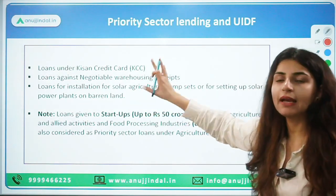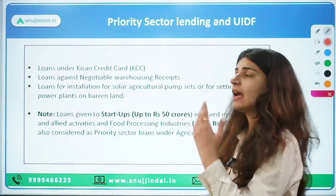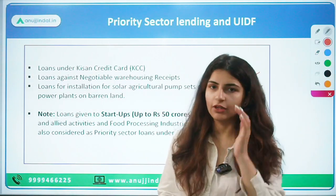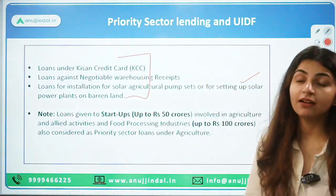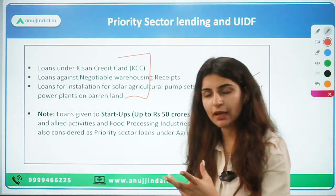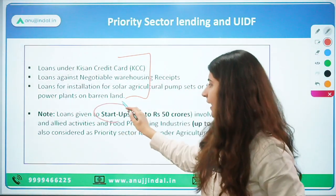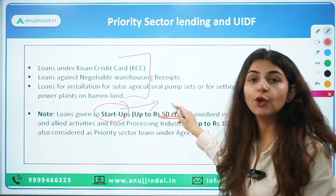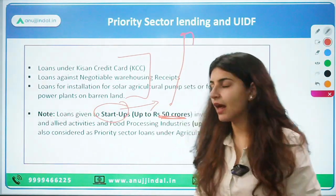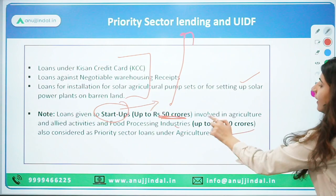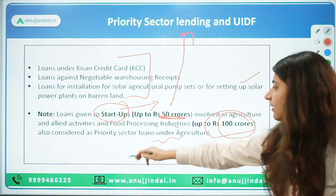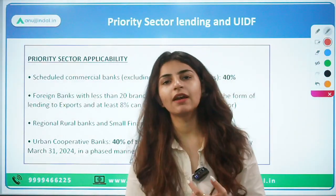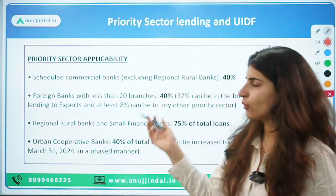Loans for installation of solar pumps, sets, and setting up solar power plants are also covered under PSL. Loans to start-ups working towards agriculture and allied sectors, up to 500 crore, are under the PSL target. In food processing, loans up to 100 crore will be under PSL loans for the agriculture sector. So start-ups, KCC, negotiable warehousing receipts, and other important items are all covered.